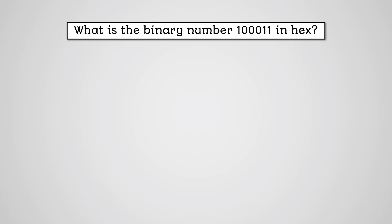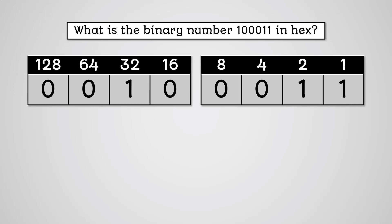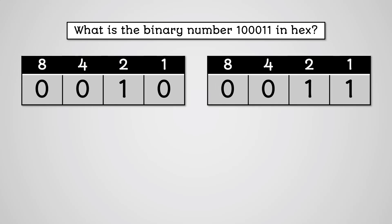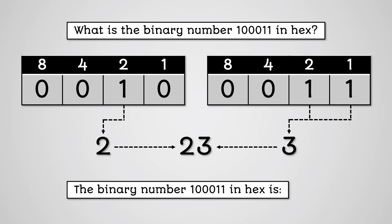We can see this by working through an example. Let's take the binary number 100011. What we need to do is turn these 6 bits into 2 four-bit nibbles, which means we'll need to add 2 zeros to the left of this number. Now let's split this into 2 separate nibbles and treat them as 2 separate binary numbers. We convert these by adding up the column values that have 1s in them. The first number is equal to 2, the second number is equal to 3. So the binary number 100011 in hexadecimal is 23.